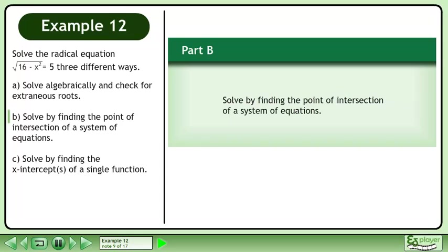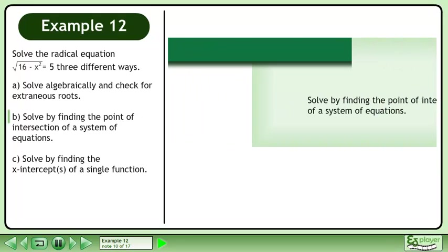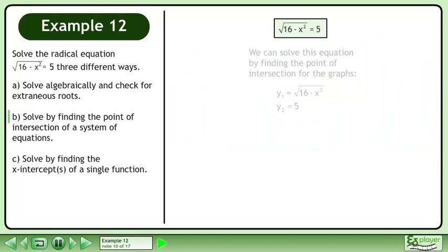In Part B, solve by finding the point of intersection of a system of equations. Find the intersection for the graphs y₁ = √(16-x²) and y₂ = 5.